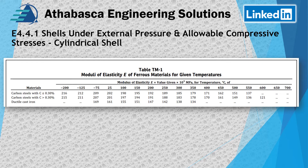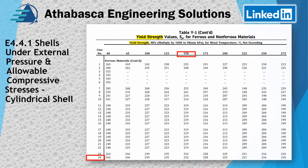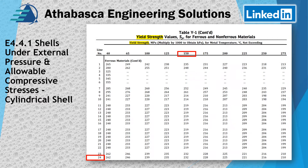Looking in more detail at Table TM1, you can see on the left we have carbon steel with low carbon content, and the elastic modulus is 195 GPa at 150°C. Continuing to Table Y1 — at 150°C, line 24, we get a yield strength value of 232 MPa.